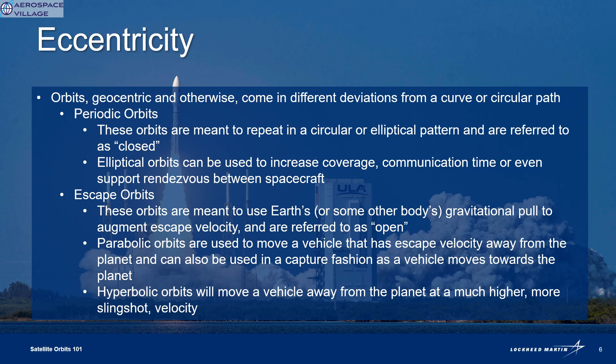Parabolic orbits are used to complete minimum energy escapes if they're moving away from the Earth, and captures if they're moving towards a planet. Hyperbolic orbits can send a vehicle off at a much higher speed. These orbits are factors in gravitational slingshots, where a vehicle flies by a planet and uses its gravitational pull to pick up speed.